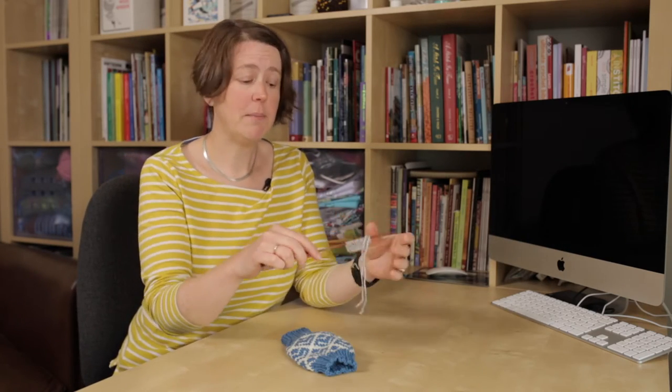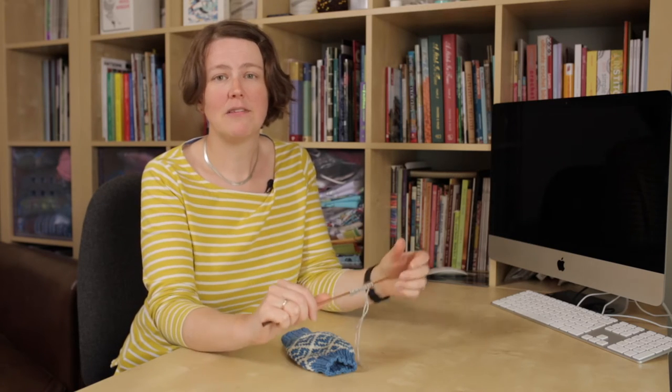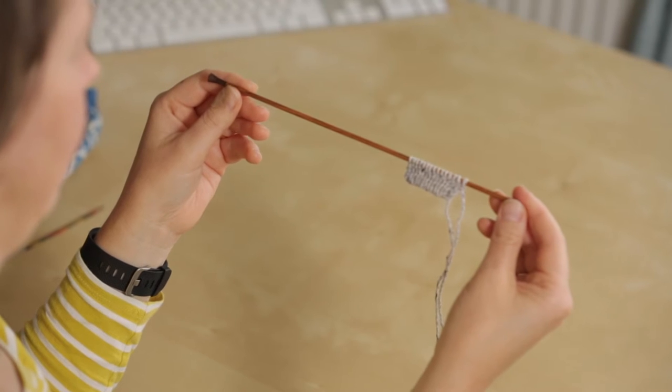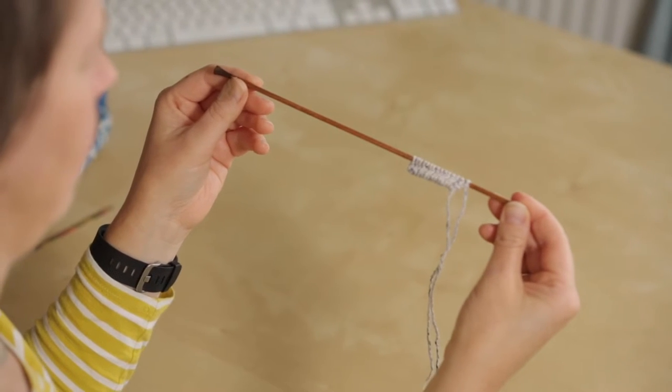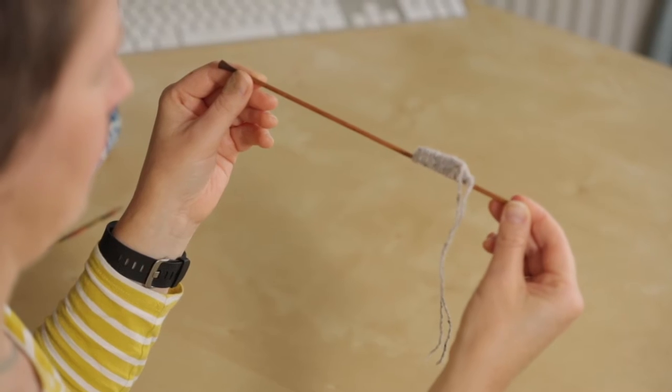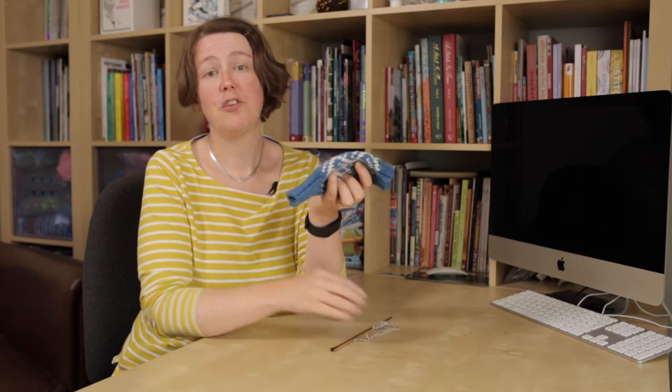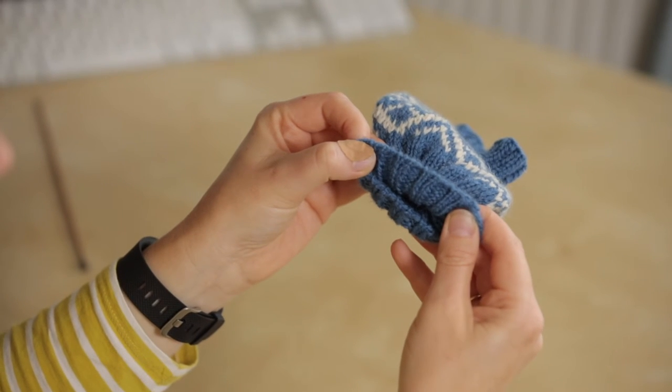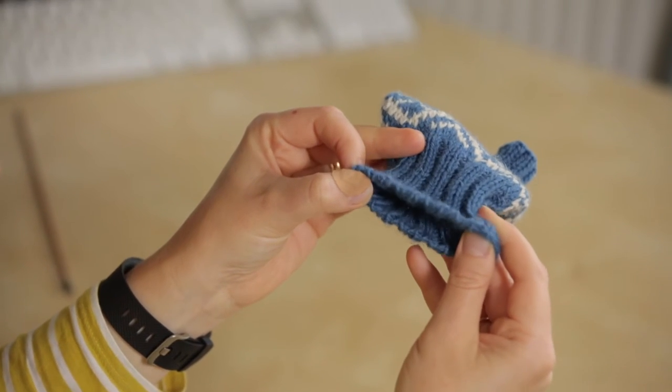Today I'm going to show you how to do a tubular cast on for one by one rib. It's the technique that's used in my nut hap design in the book of haps. The tubular cast on for one by one rib looks like this. You can see that the stitches almost seem to appear from nowhere, they wrap around to the other side. You can also use it for two by two rib as demonstrated on this porky mitt by Kate Davis, and again the stitches just wrap around from one side to the other without any obvious start or finish.